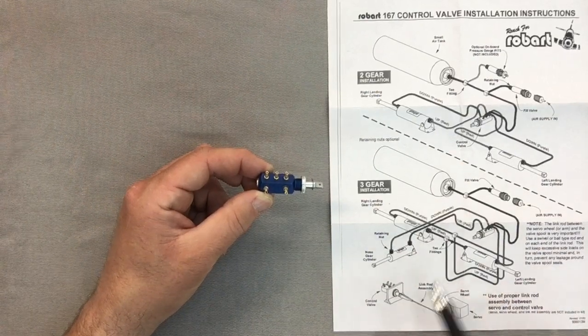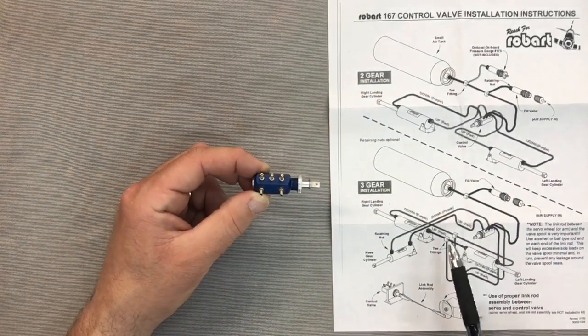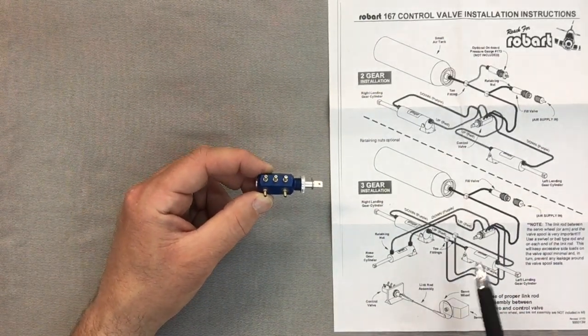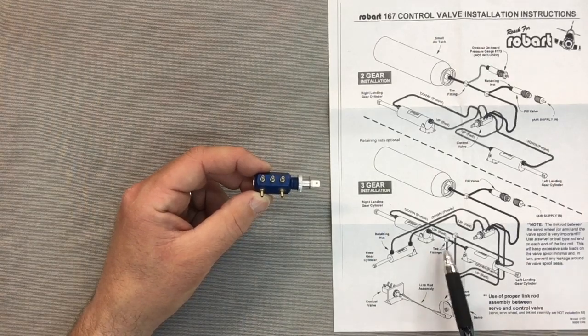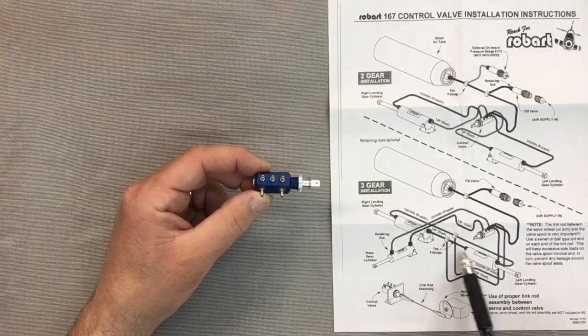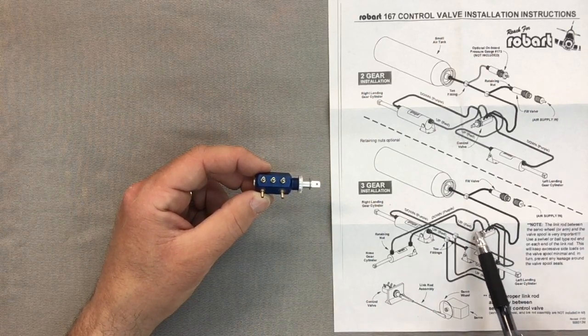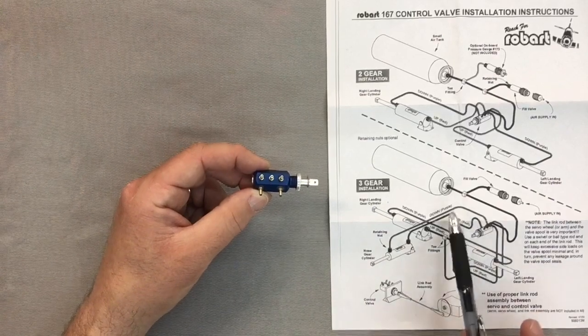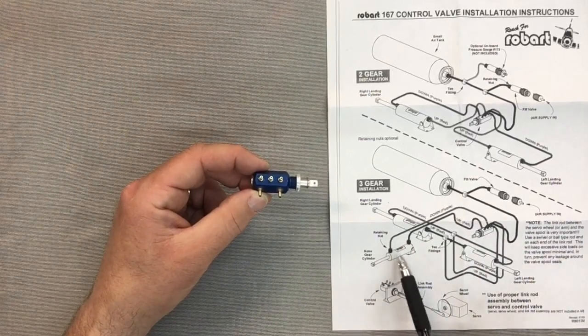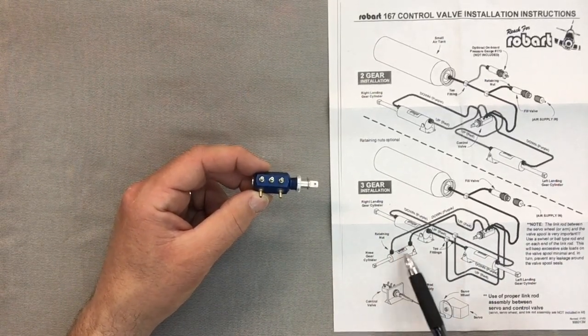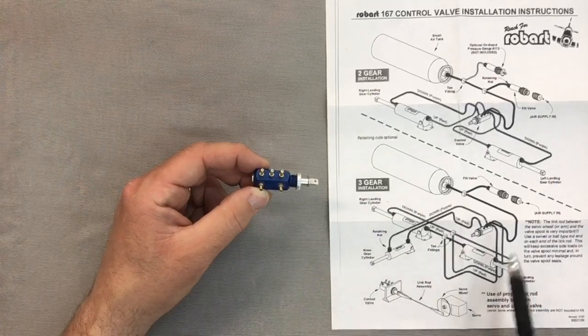You could also work out the same thing on a three gear installation. On your air up, you would splice those together, and on the air down you would splice those together. Then on an air up for your tail or for your nose gear, those would go directly to the air valve.